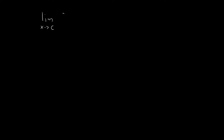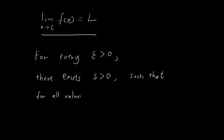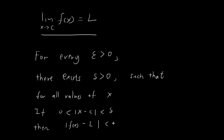I will now state the definition and then explain it. The statement 'the limit as x tends towards c of f of x is equal to L' is completely equivalent to the epsilon-delta definition, which goes: for every value of epsilon greater than zero that we choose, there exists some value of delta also greater than zero, such that for all values of x, if x lies within a distance of delta away from the point c, then this immediately implies that the corresponding f of x will lie within a distance of epsilon away from the limit L.